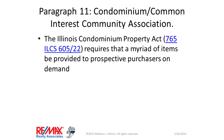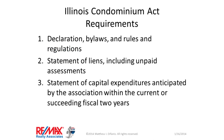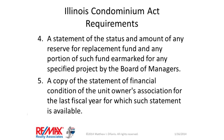Here's a quick run-through, copied right out of the statute. Number one: declaration, bylaws, and rules and regulations. Number two: statement of liens including unpaid assessments. Number three: statement of capital expenditures anticipated by the association within the current or succeeding fiscal two years — so you have to have a crystal ball to see up to two years into the future. Number four: statement of the status and amount of any reserve for replacement fund and any portion earmarked for any specified project by the board of managers. Number five: a copy of the statement of financial condition of the unit owners association for the last fiscal year for which such statement is available.